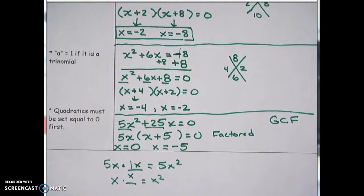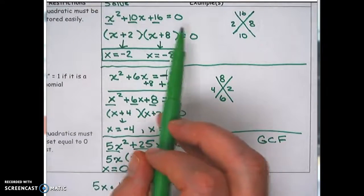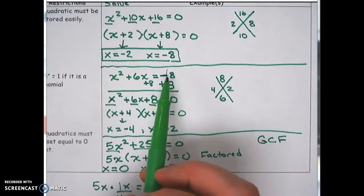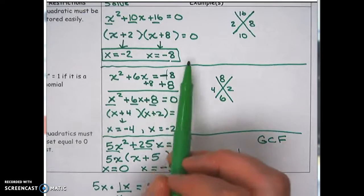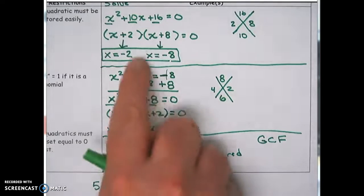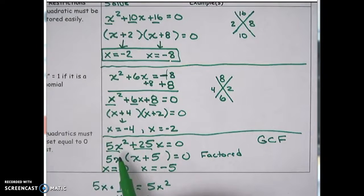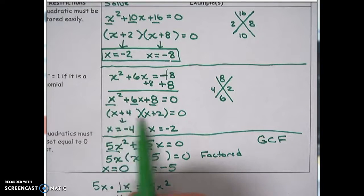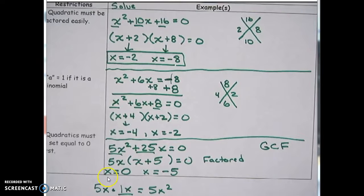A few key things to remember when solving quadratics by factoring: first, make sure it's equal to 0 — if not, move terms using inverse operations. Once it's equal to 0, check if it's easily factorable. If it's a trinomial, use factor x. If it's a binomial or shares a common factor, use GCF. Then apply the zero product property to find your solutions. Watch this video as many times as needed, and ask if you have any questions.